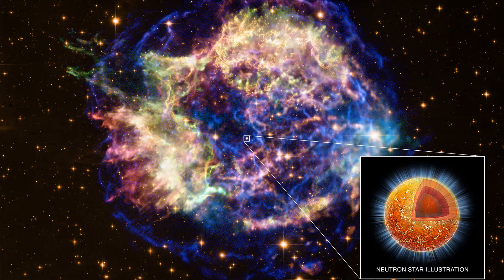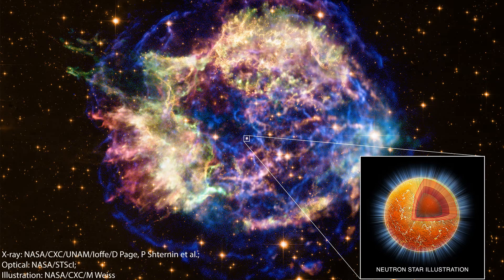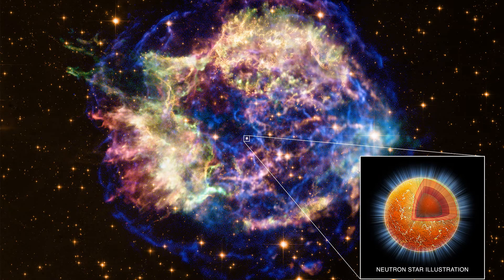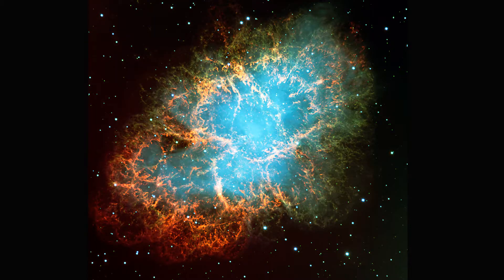Most of the star's matter gets ejected into space and what remains is a collapsed core with an incredibly high density and very strong magnetic fields. Matter that is ejected, also called supernova remnant, often forms beautiful structures such as Crab Nebula, which is a remnant of a supernova that happened in the year 1054.